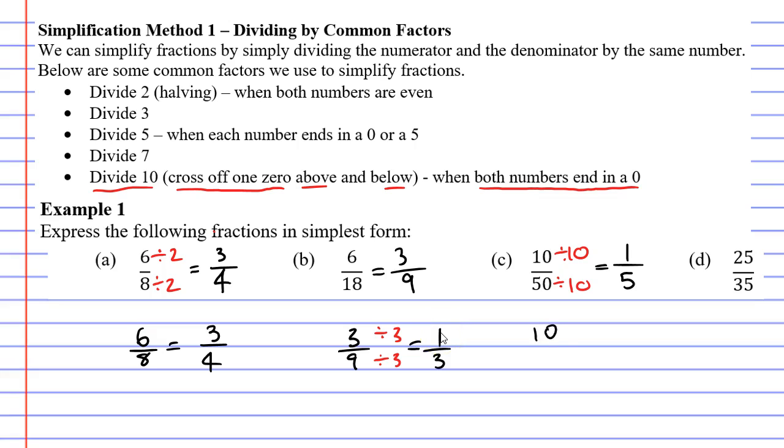Let's try that instead. So if I had 10 over 50, and I crossed off 1, 0 above, and 1, 0 below, I get 1 over 5 as well. Some people prefer to divide by 10, and some people prefer to cross off the 0s.